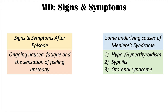Some of the underlying causes that can lead to Meniere's syndrome include hypothyroidism (a low-functioning thyroid), hyperthyroidism (a high-functioning thyroid), syphilis (an infection with syphilis), and a condition known as autoimmune inner ear syndrome. With these underlying causes, they also have their own signs and symptoms. Please check out my lessons on these topics for more information.